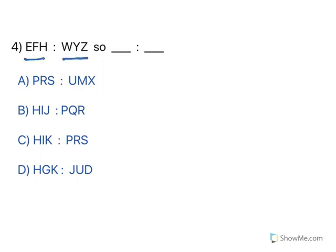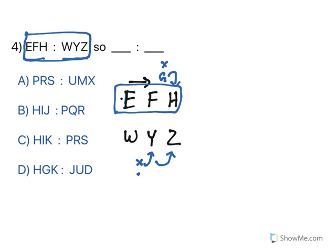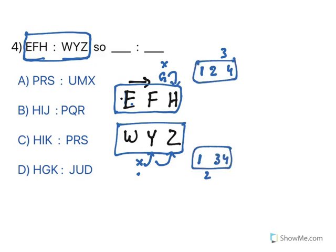Let us move to the next one. Look at them: E-F-H / W-Y-Z. You need to find out what is the relationship between these two sets. After E, the next alphabet is F. After F it is G, but G is missing here. After G you have H. So the pattern is: two consecutive alphabets, then one is missing, then the fourth. In the bottom set: W, then X is missing, then Y, then Z. So in the top one, positions 1, 2, 4 are present; in the bottom, positions 1, 3, 4 are present.